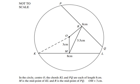Hello and welcome to my channel. In this video we are going to solve an example on circles. In the circle with center O, the chords KL and PQ are each of length eight centimeters, so we can see that the length of the two chords KL and PQ are the same, which is eight centimeters.